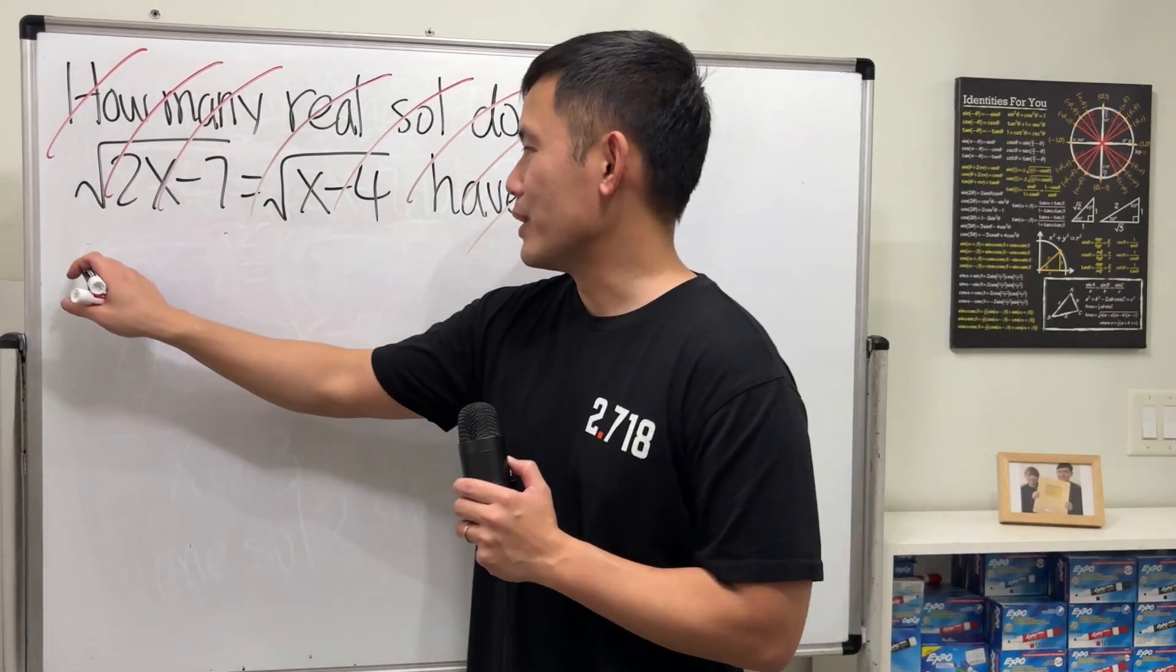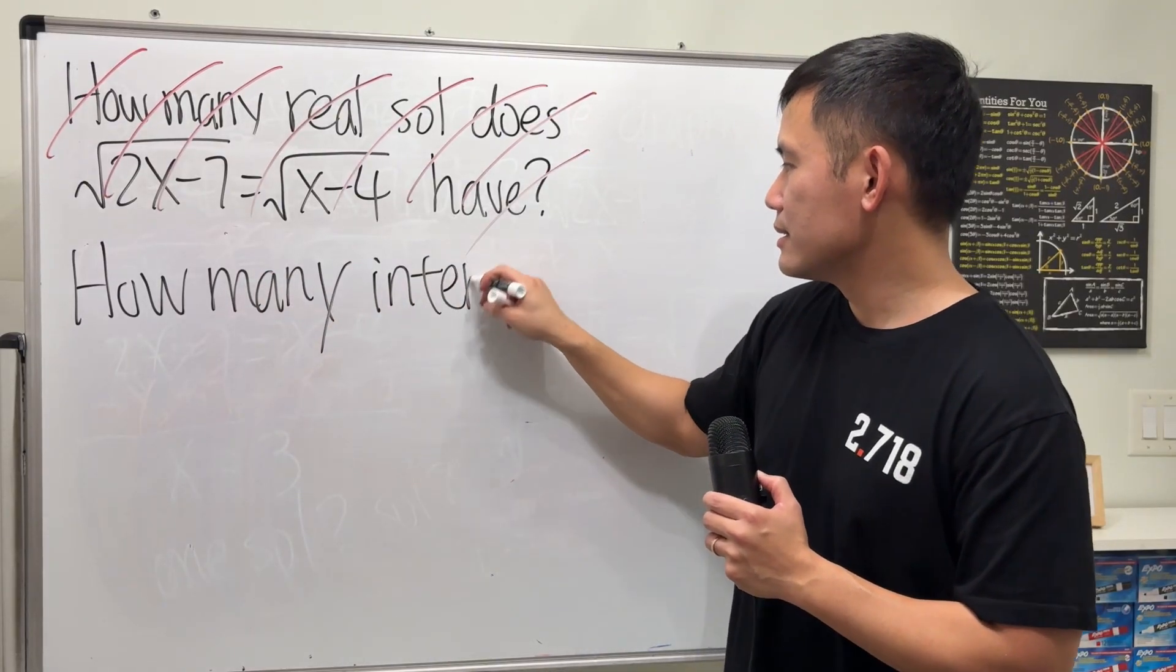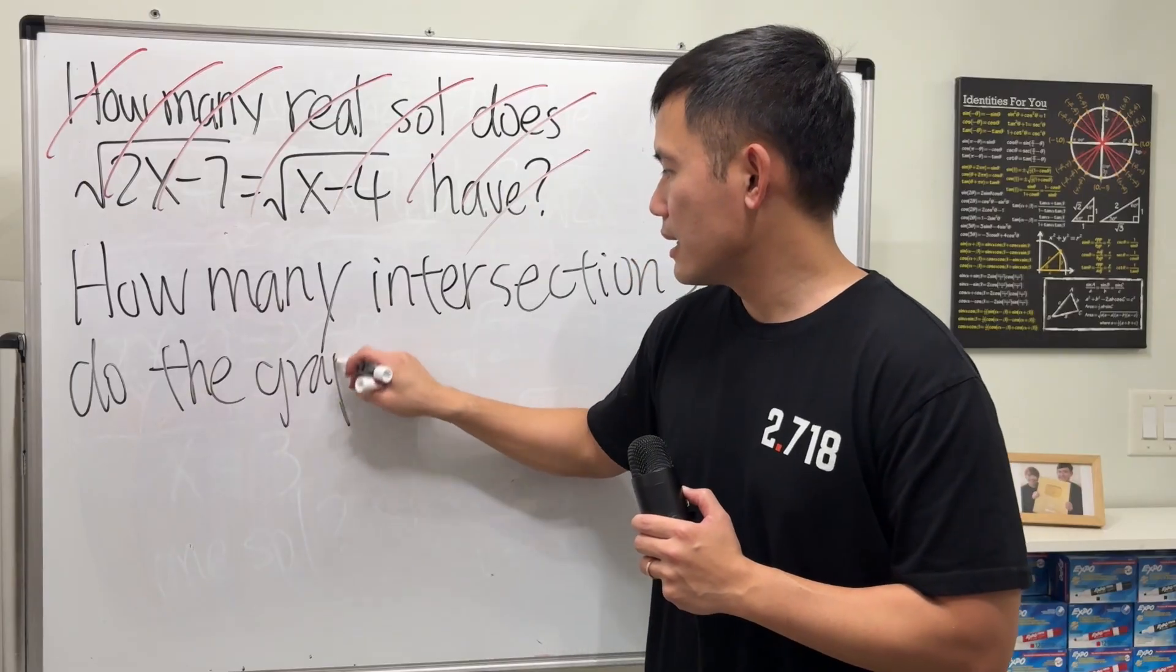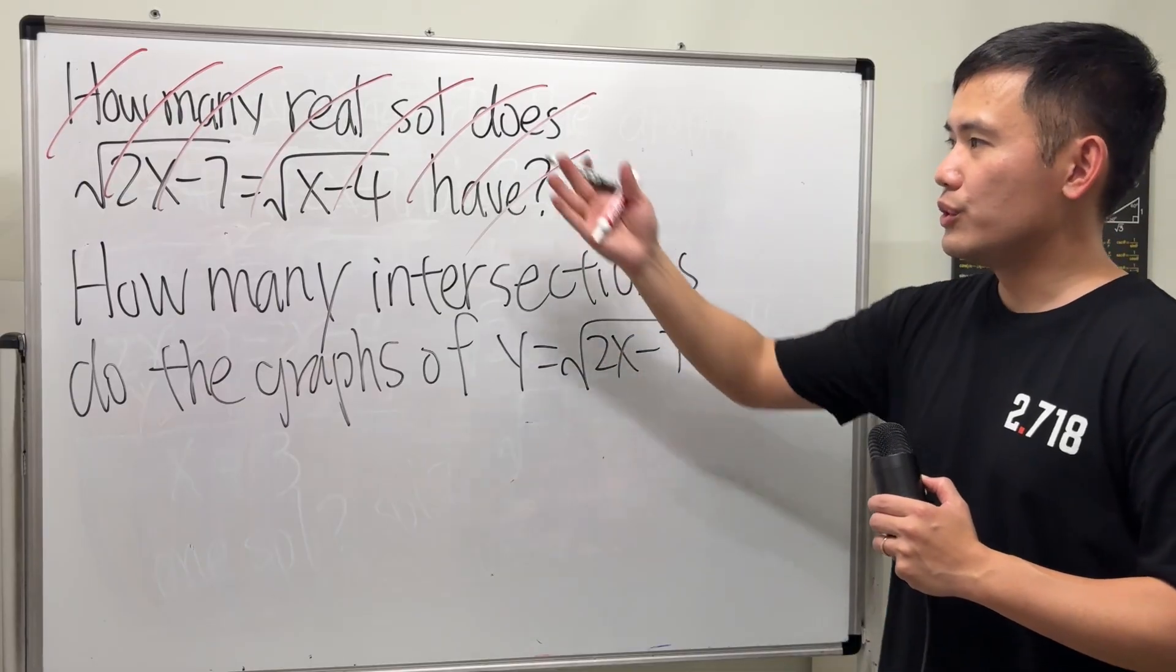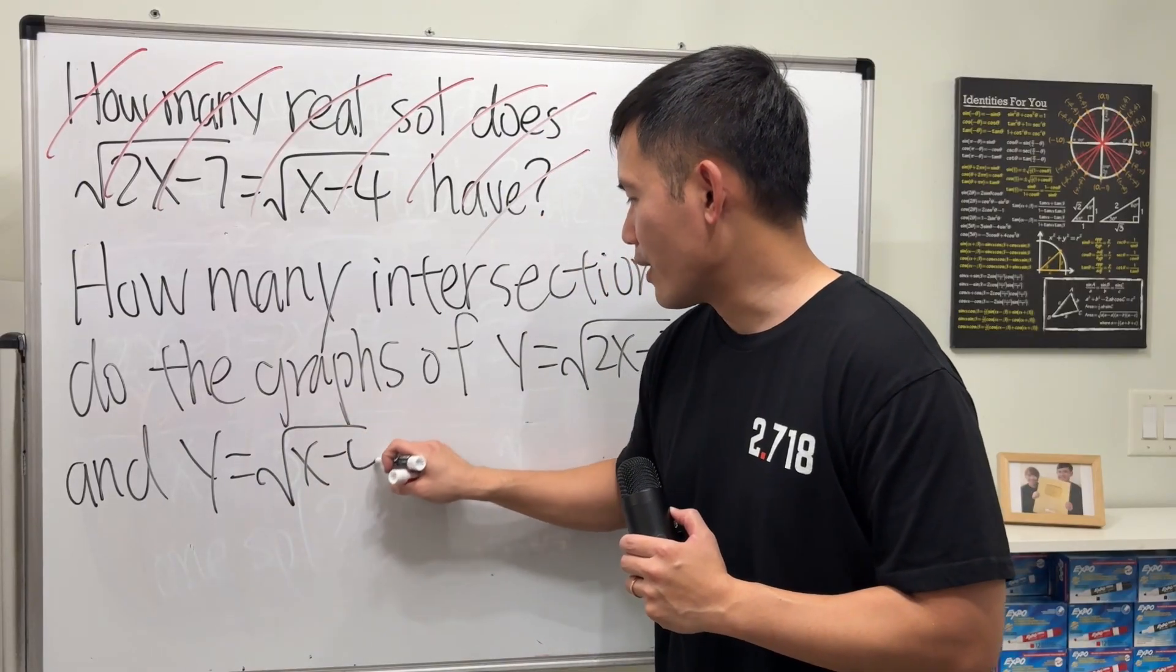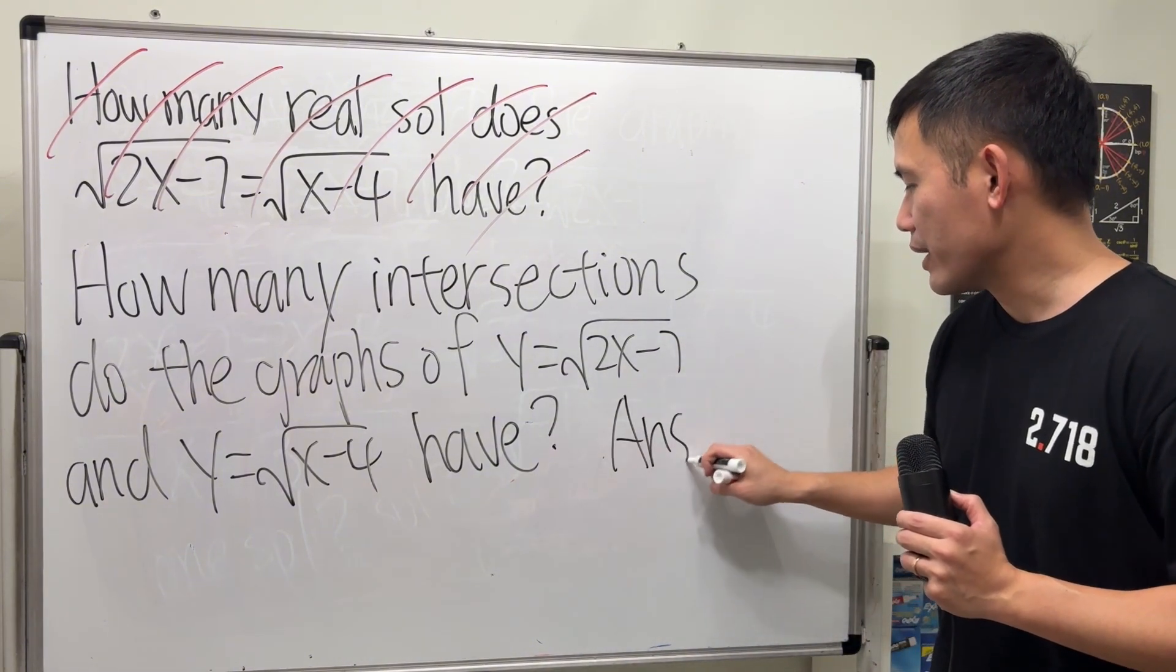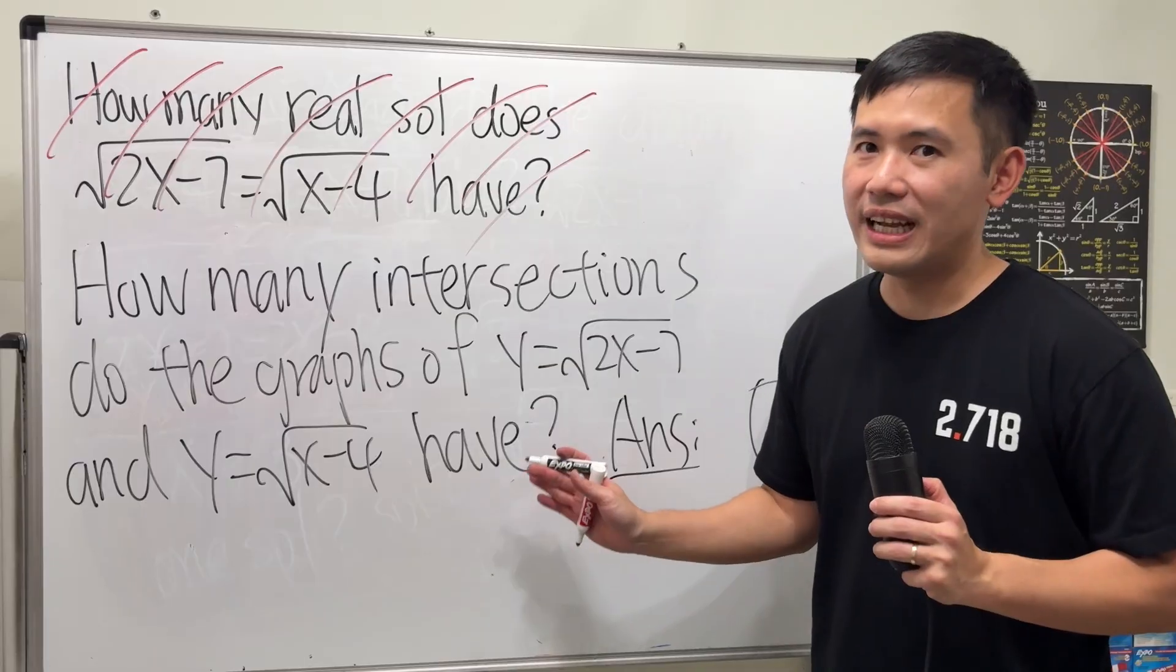So I'm just going to kind of gently cross it out like this. But instead, I will ask the following question. I would like to ask, how many intersections do the graphs of y is equal to square root of 2x minus 7, which is the left-hand side, and y is equal to square root of x minus 4, have. Now this is a totally fair question, and I will tell you the answer for this right here is 0 or none. Because they are not going to intersect at all.